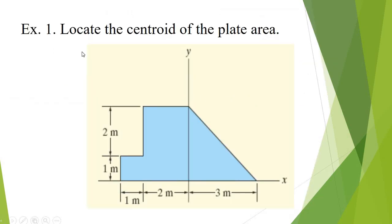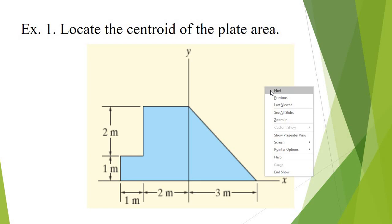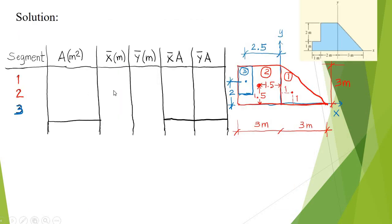Now we will have our illustrative example: locate the centroid of the plate area. We have here our irregular shape plate. The dimensions are: this is 3 meters, the total height is 1 plus 2 equals 3 meters, and we are given these corresponding dimensions. We will solve this problem and locate the centroid. Prior to that, we are going to set up a table with 6 columns: column 1 for segment, column 2 for area, column 3 for x-bar, and so on.